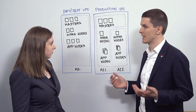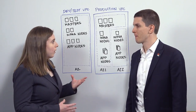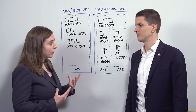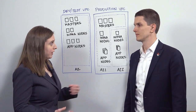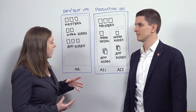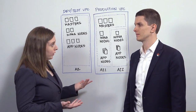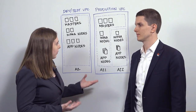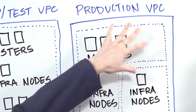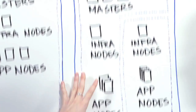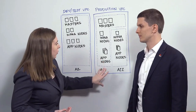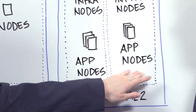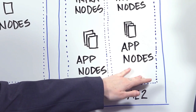What are those availability zones giving us in production? Availability zones are basically just different physical locations where your resources can sit. Using two or more in your production clusters increases your high availability, because if one of these zones goes entirely down, your applications that are deployed into the second zone will still be up and running.